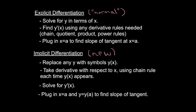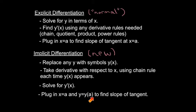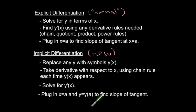Implicit differentiation works differently. Instead of solving for y, leave the expression as is and replace every y with y of x, so we think of y as a function of x. Take the derivative with respect to x, and every time y of x appears, use the chain rule. Finally, solve for y prime, then plug in both the x and y values to find the slope of the tangent at a particular point.